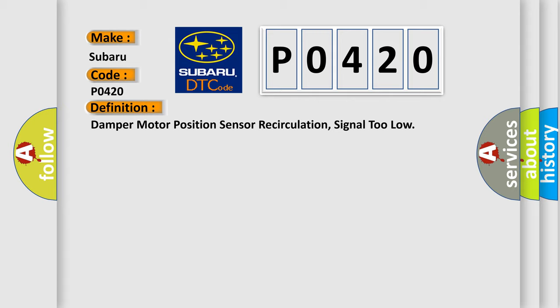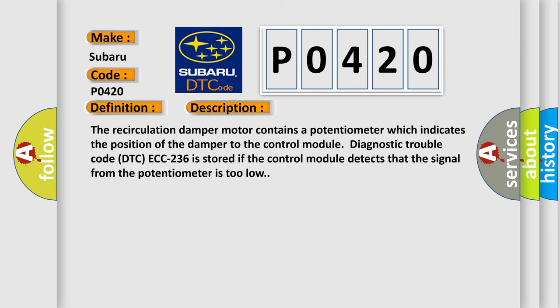And now this is a short description of this DTC code. The recirculation damper motor contains a potentiometer which indicates the position of the damper to the control module. Diagnostic trouble code DTC ECC 236 is stored if the control module detects that the signal from the potentiometer is too low.